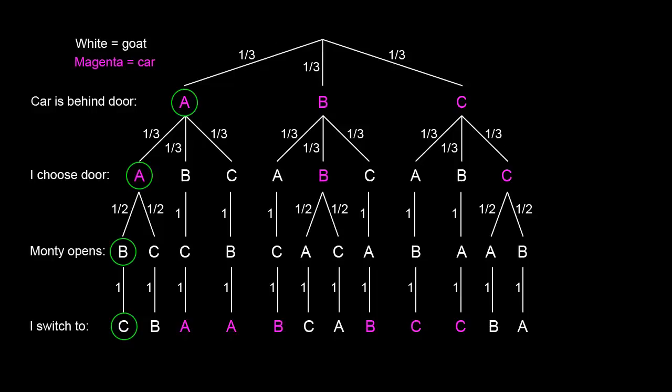So in the bottom row we can see that the winners are in magenta, and the losers are in white. Now let's compute the probabilities of winning and losing. Each losing path has a probability of one-third times one-third times one-half times one, which equals one-eighteenth. Since there are six losing paths, the total probability of losing is six times one-eighteenth, which equals one-third.